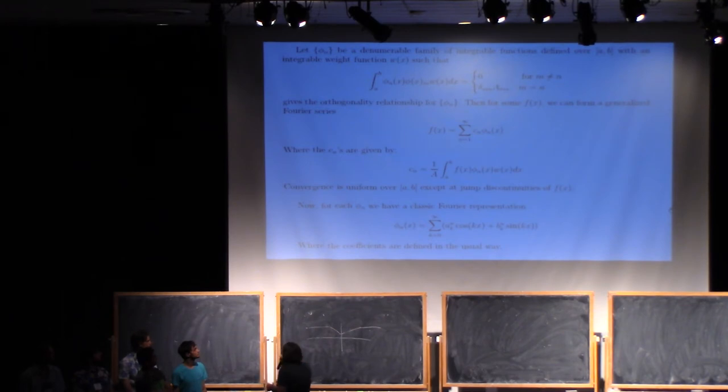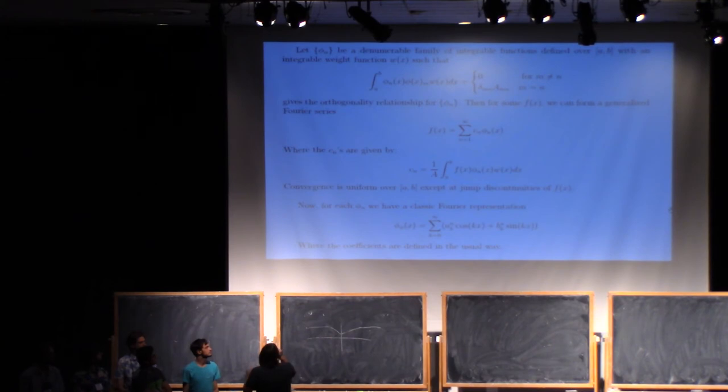Okay, so anyway, so we wanted to ask, why is it that you get the Gibbs constant for these generalized orthogonal functions? So one plausibility argument that we found is this. So basically, the idea is to take the Fourier series of your orthogonal functions, right? And so what you can do is, if you've got uniform convergence for that Fourier series for that function, and uniform convergence for the Fourier series for the original function that you want to approximate with your generalized Fourier series.